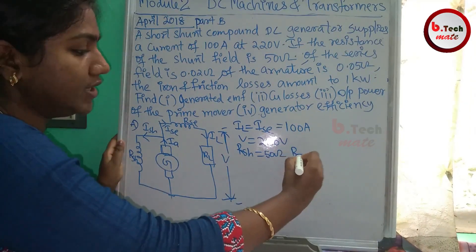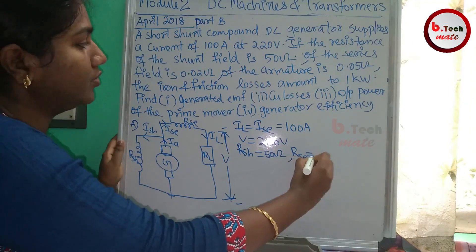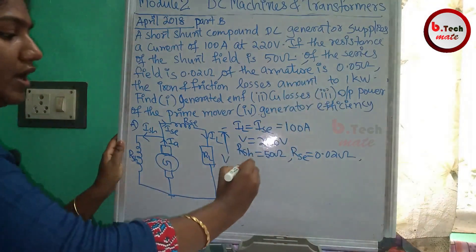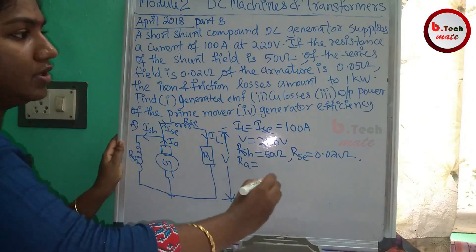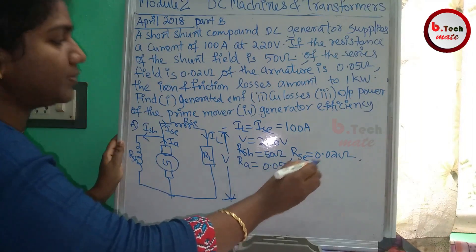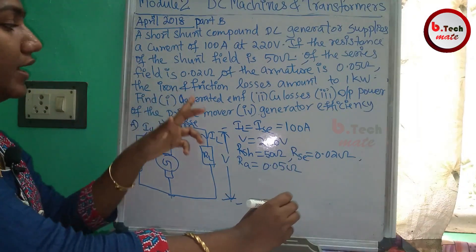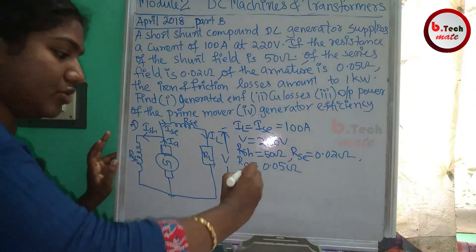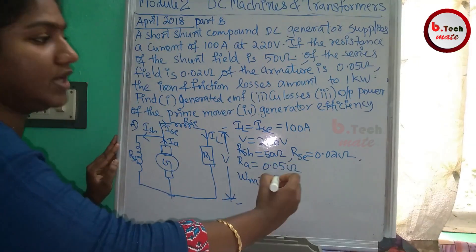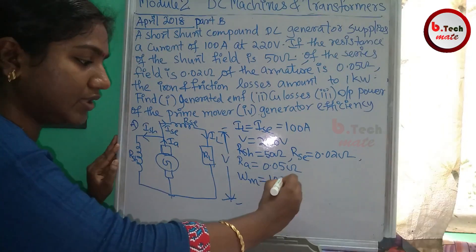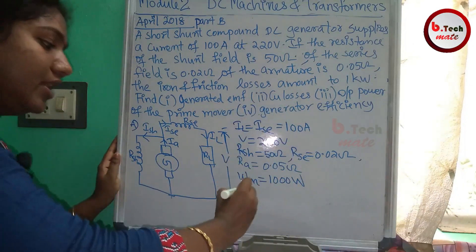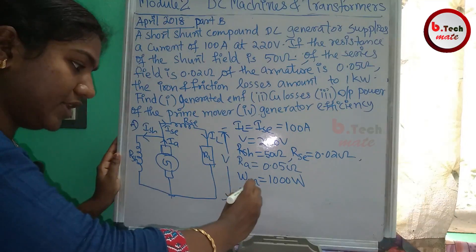The resistance of the shunt field RSH is equal to 50 Ohm. The series resistance RSE is equal to 0.02 Ohm, and the armature resistance RA is equal to 0.05 Ohm. The iron and frictional losses — that is, the mechanical losses — amount to 1 kW, which is 1000 W.